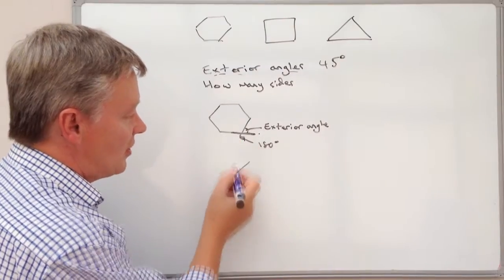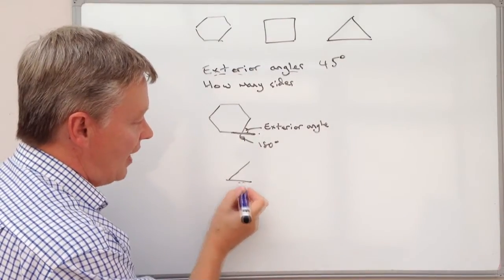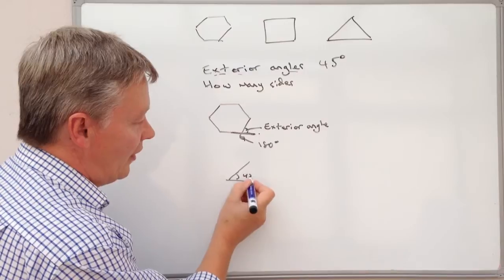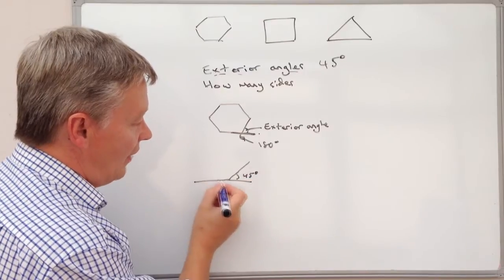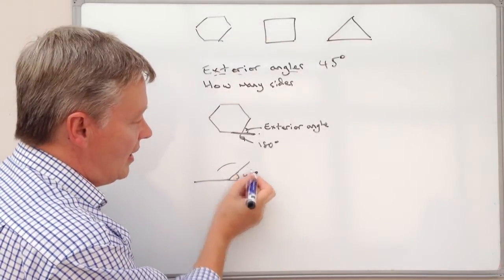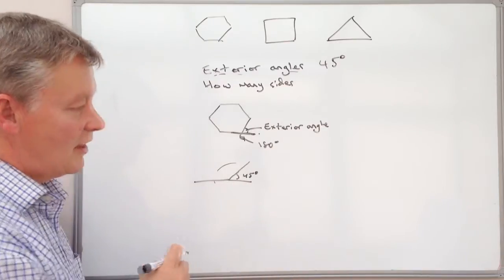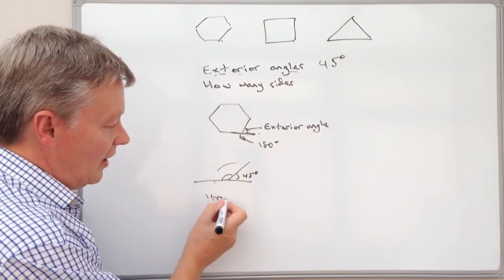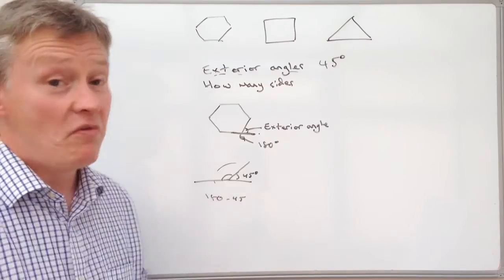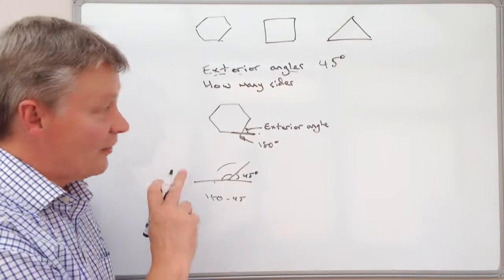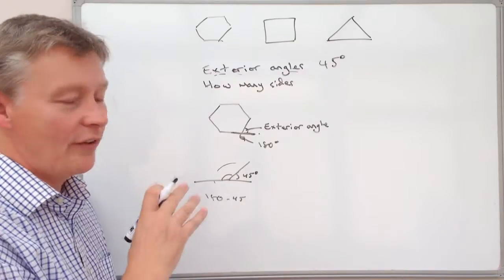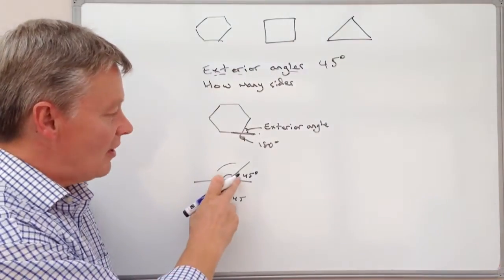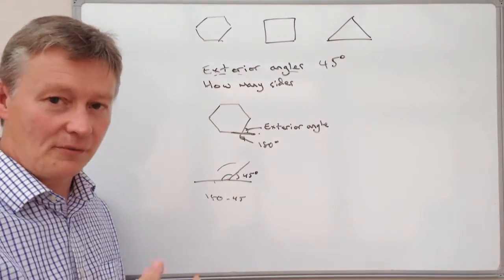If I draw this just a little bit extended, this is 45 degrees and this overall angle here is 180. So this interior angle here is 180 take away 45. That's not that important because the thing that you need to remember with a regular polygon is that all the exterior angles add up to 360 degrees.